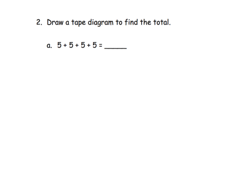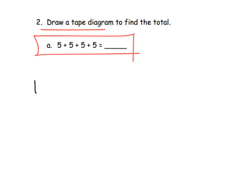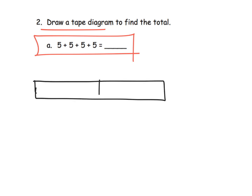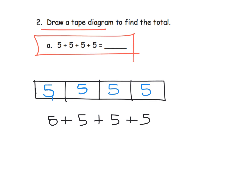For this last example, we're supposed to draw a tape diagram. Looking at it, I see four fives, so I'll draw my tape and cut it into four equal groups. Each one is supposed to be a five, so we put a five in each section — there's our tape diagram. Now the repeated addition is five plus five plus five plus five.